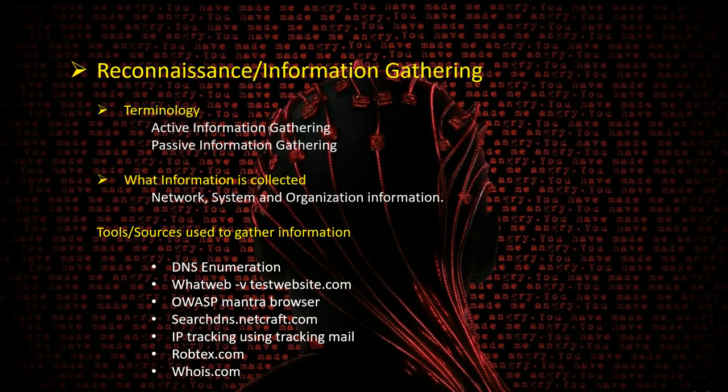The information we mainly collect falls into three categories: network information, system information, and organization information. Network information includes IP addresses, domain names, router details, and services running on TCP/UDP ports. System information covers user and group details, system or application banners, remote system architecture types, and interconnected system names.